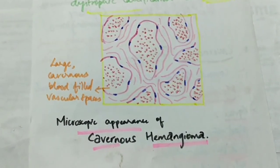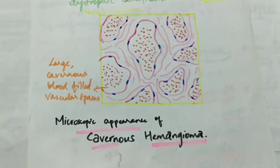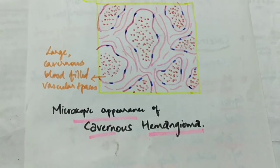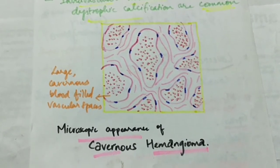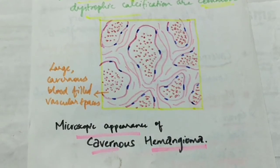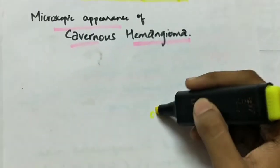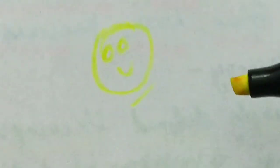This is all about the important vascular tumors — the hemangioma, which consists of capillary and cavernous hemangioma. Thank you.